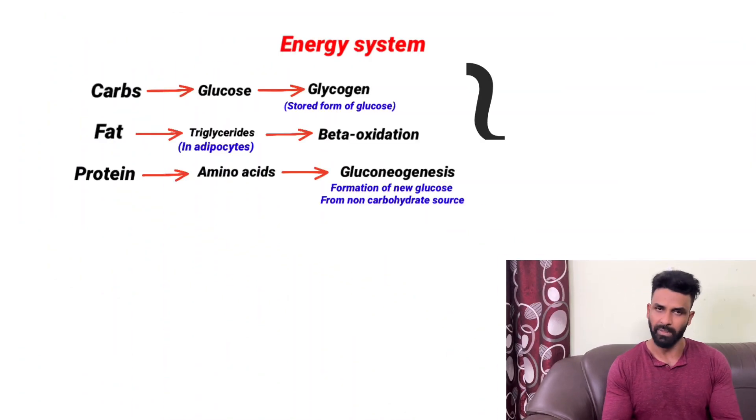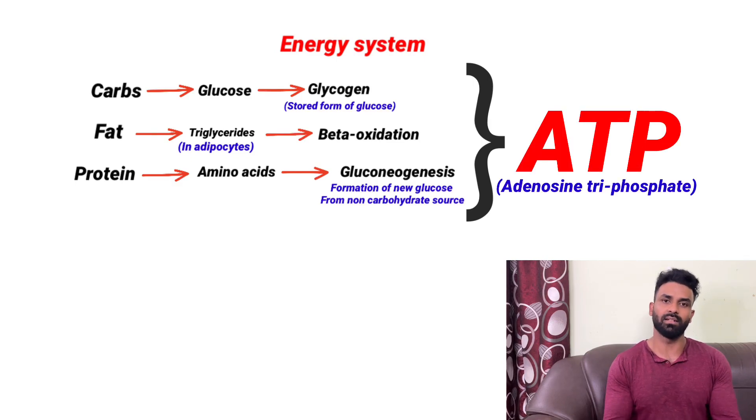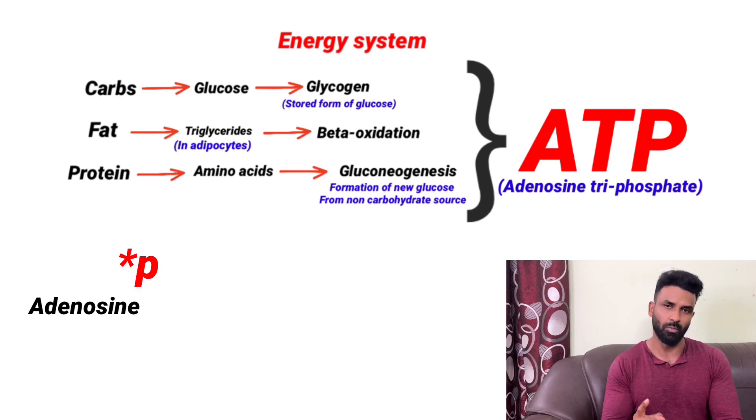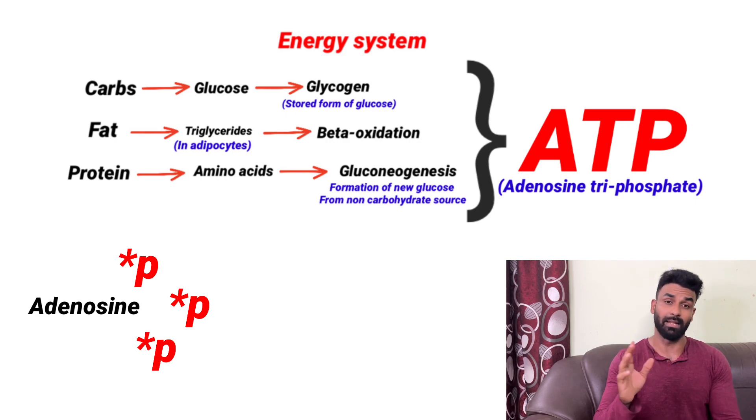Our body uses carbohydrates, fats, and proteins. But here's the twist — the body doesn't directly use glucose as energy. Instead, we generate ATP. ATP stands for adenosine triphosphate. It has three phosphate groups: one = monophosphate, two = diphosphate, three = triphosphate. That is why it is called adenosine triphosphate.